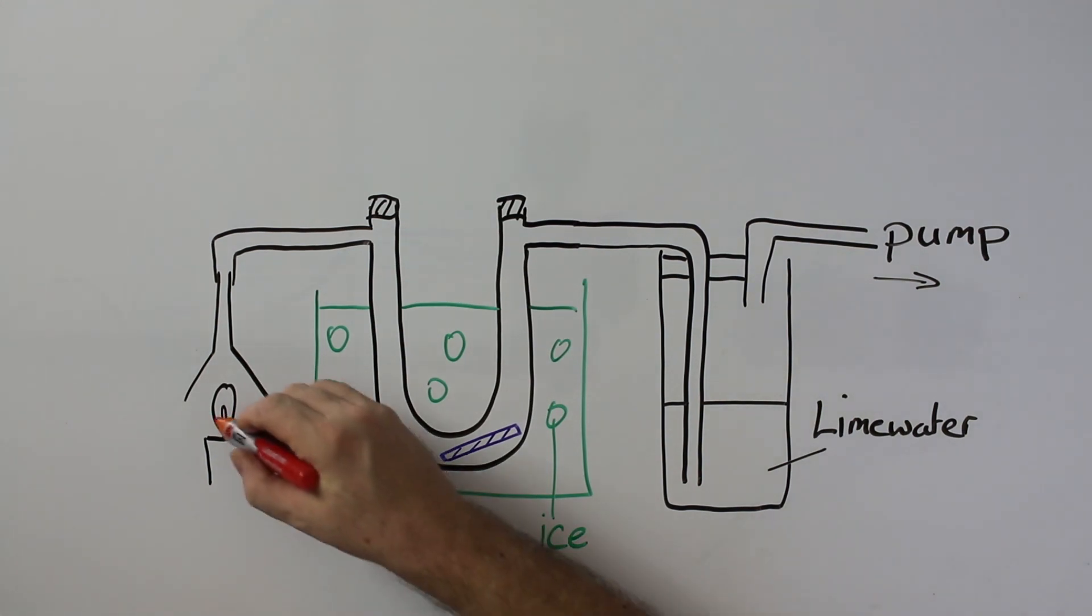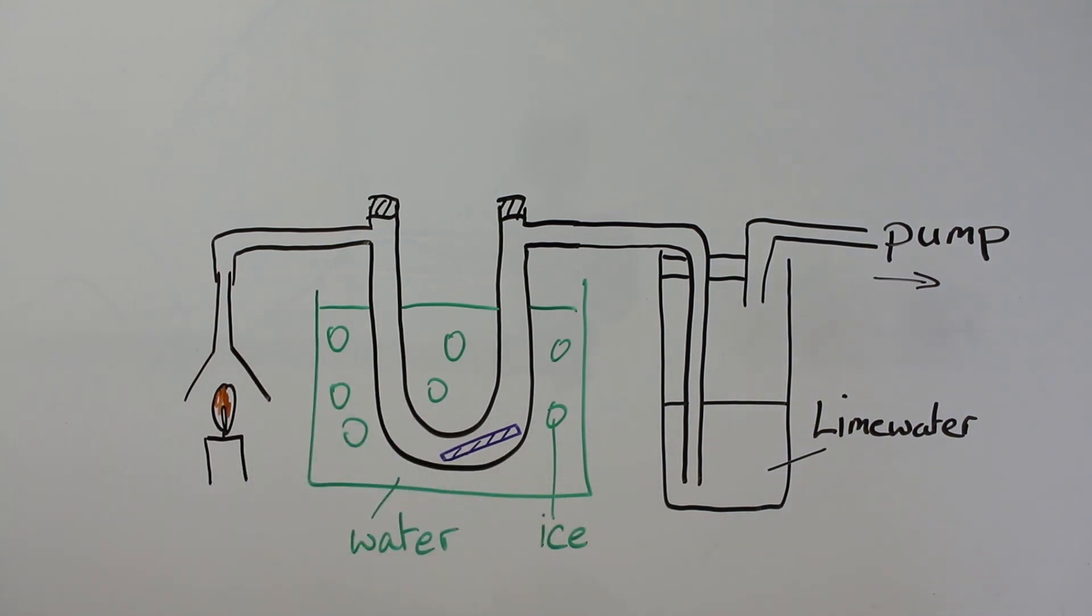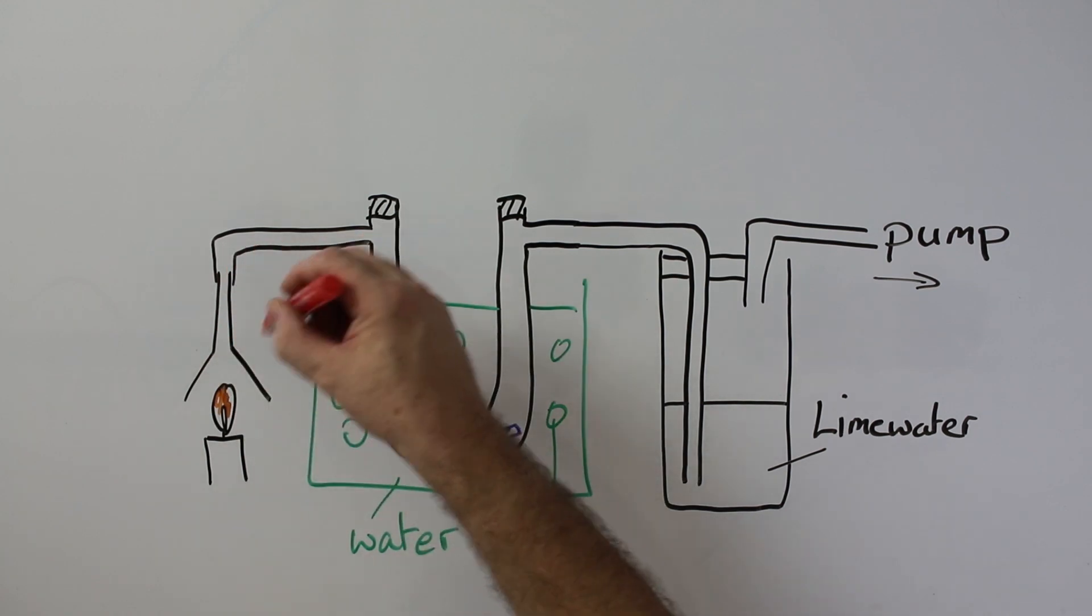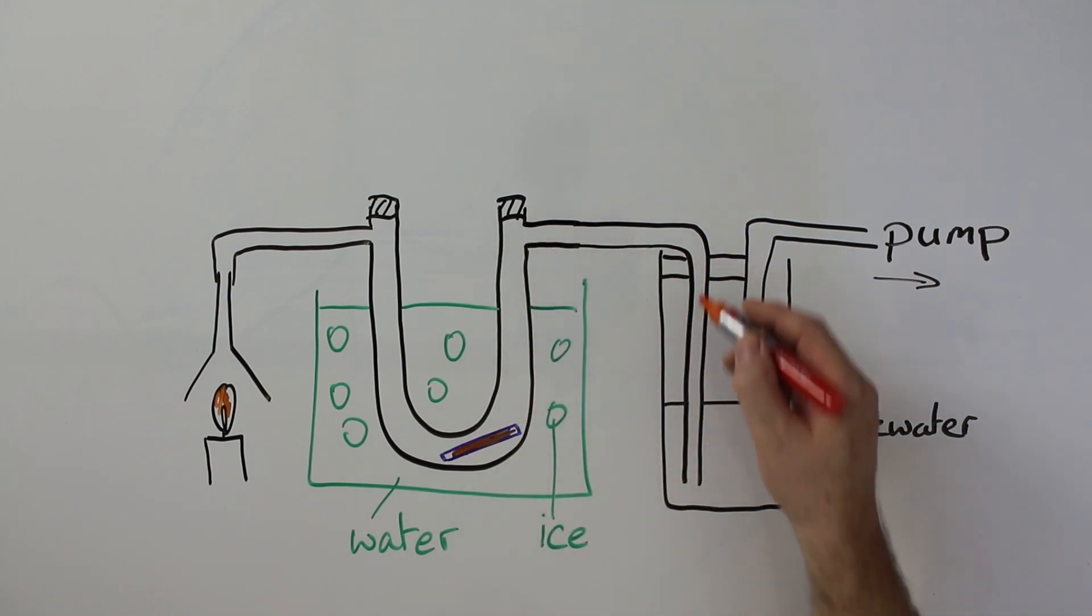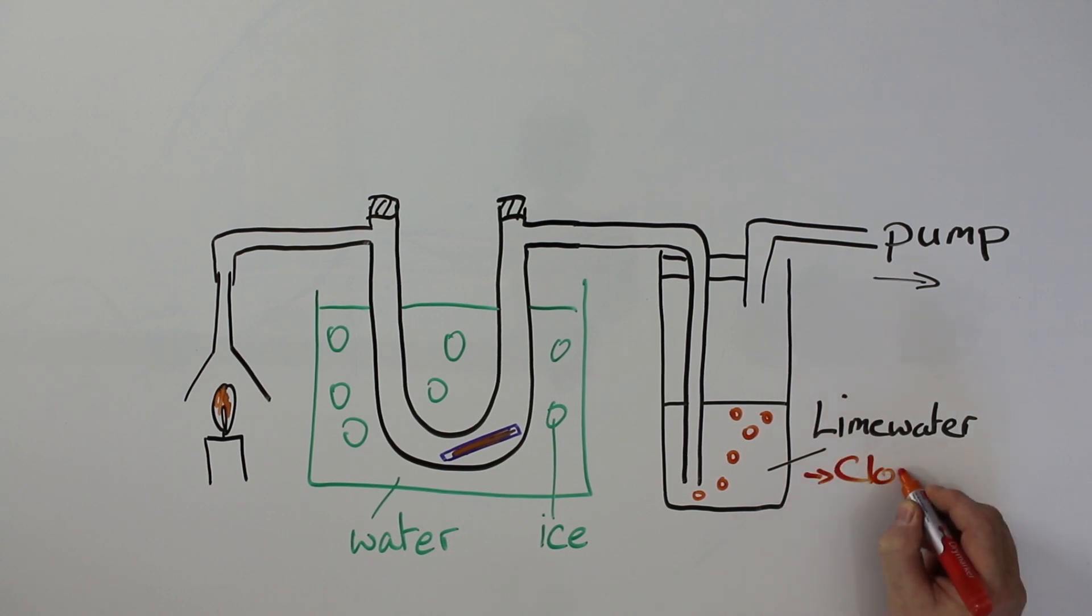The flame burns producing water and carbon dioxide. This mixture goes up through the tube because it's sucked up and in here the water condenses turning the cobalt chloride paper pink. And as the bubbles go through, then the lime water turns cloudy.